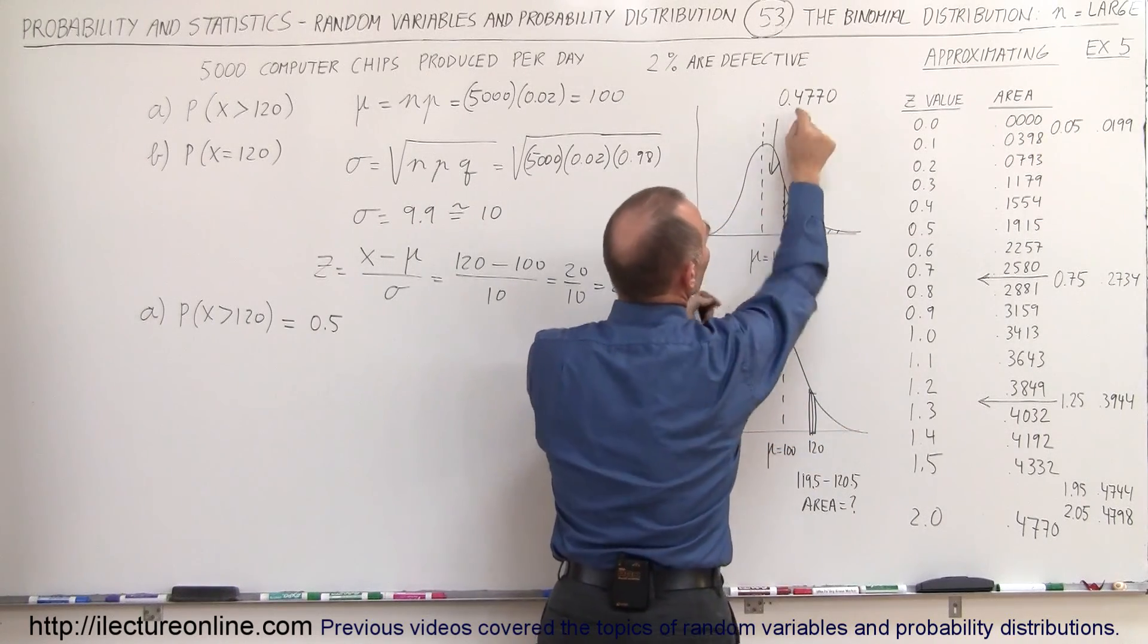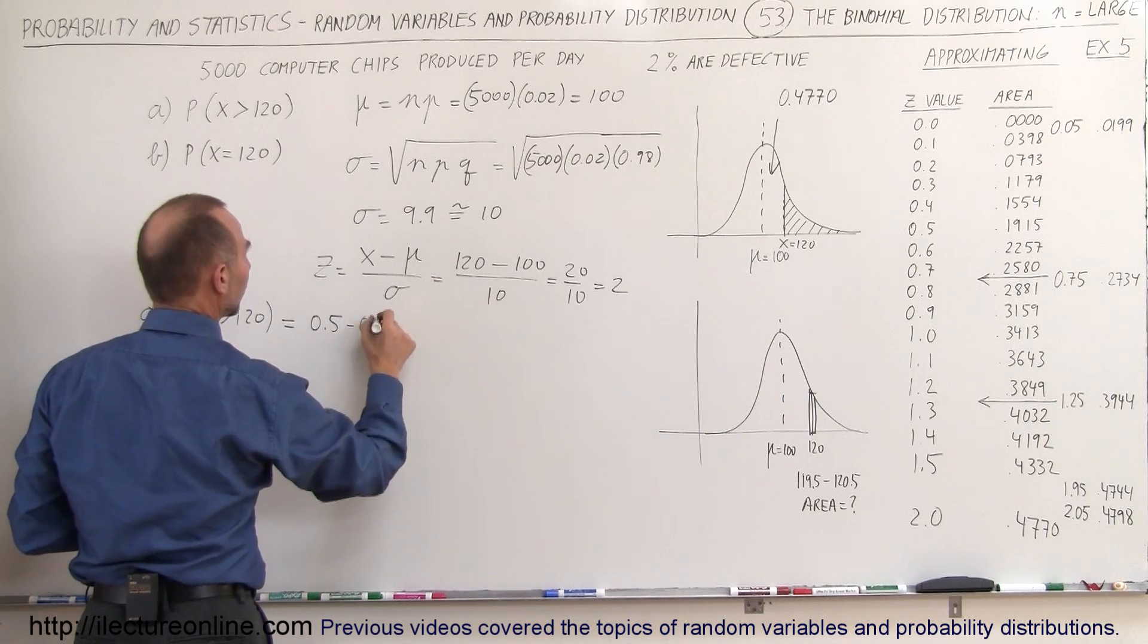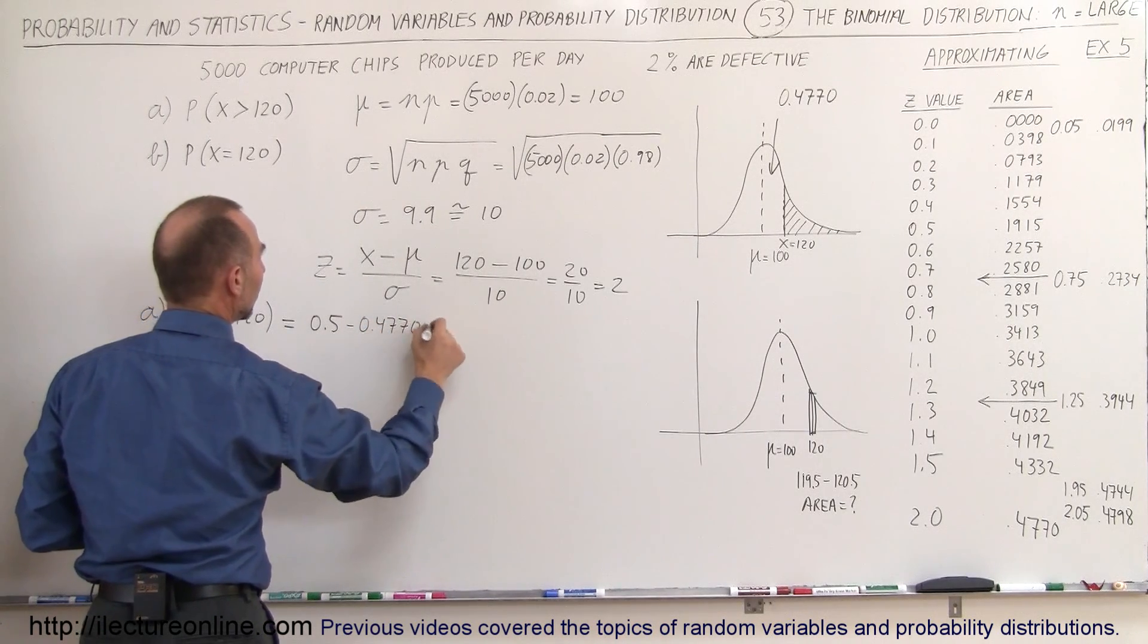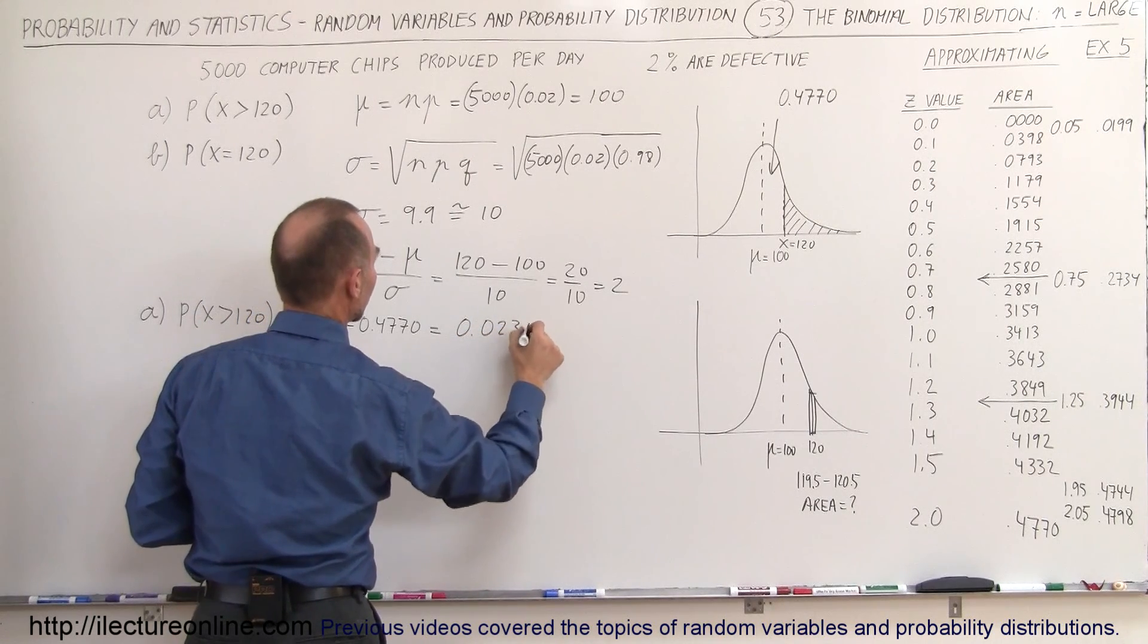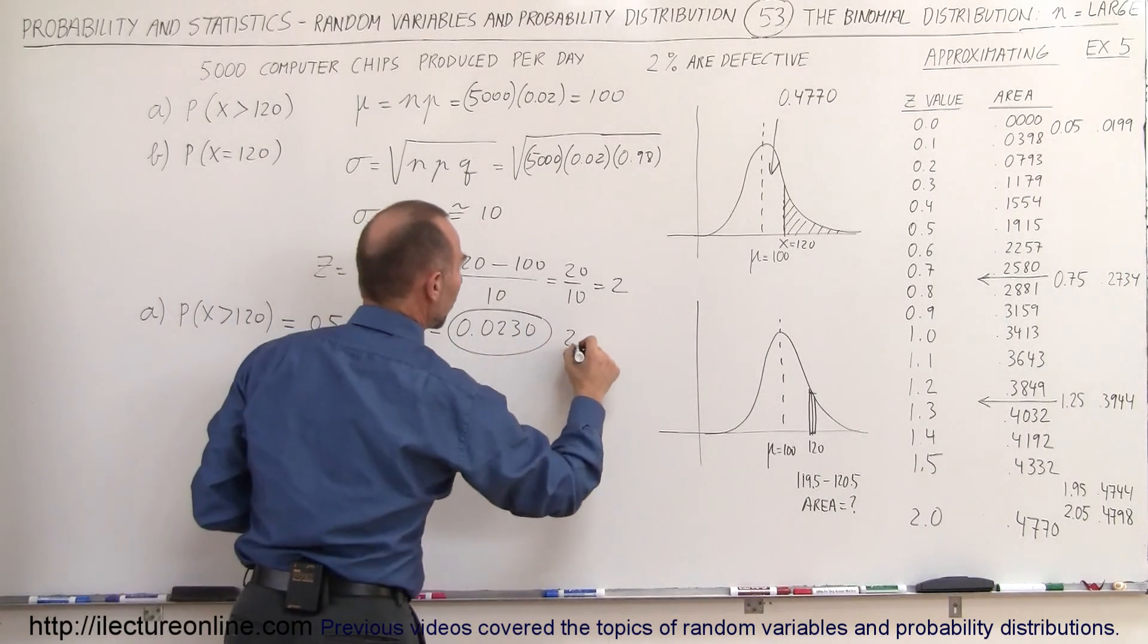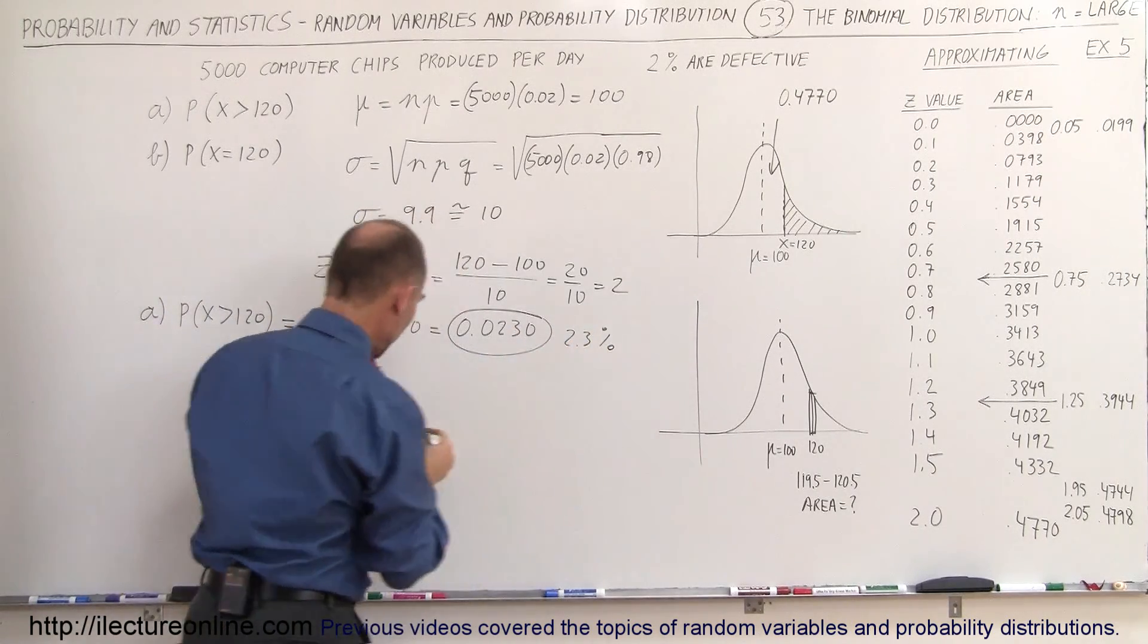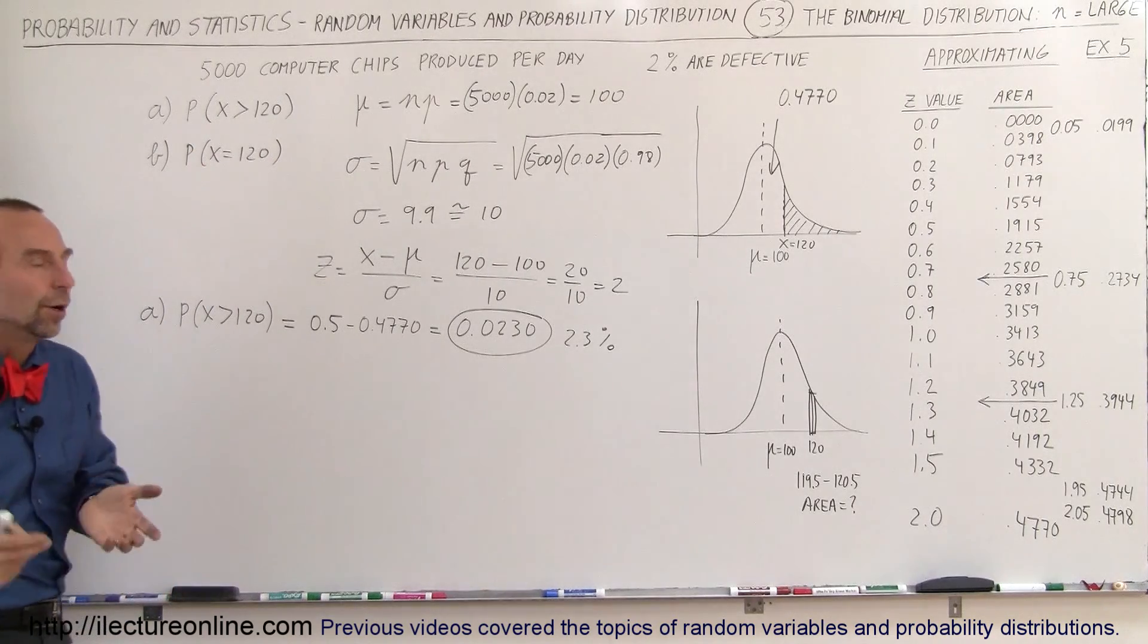minus this area, which is 0.4770. So that would be 0.5 minus 0.4770, which is equal to 0.0230, and that's the probability, which is equal to 2.3%. That's the probability that there'll be 120 defective chips or more.